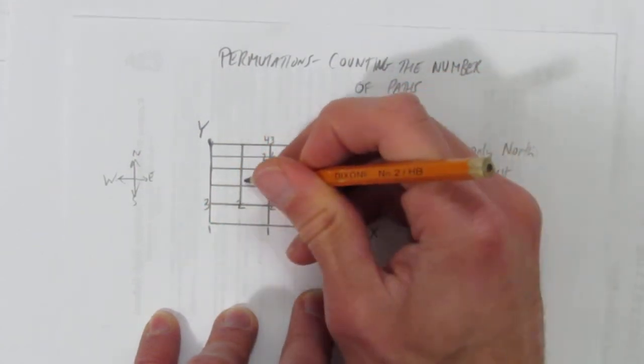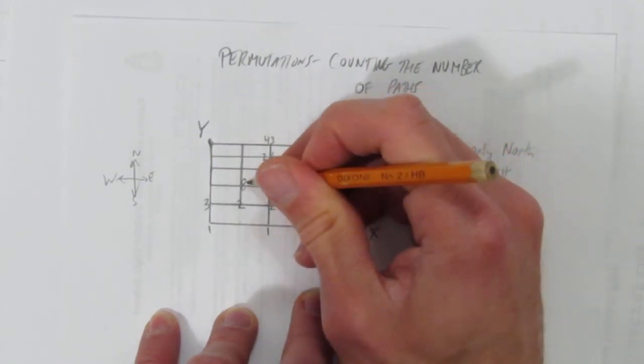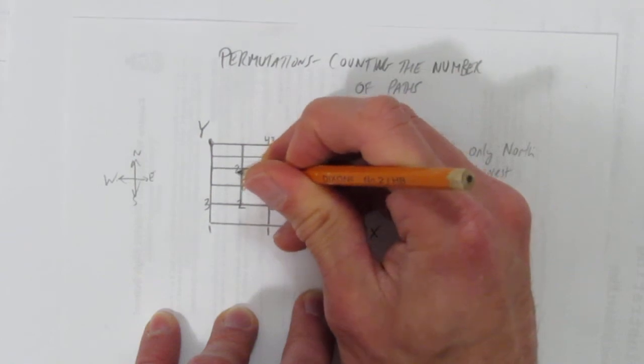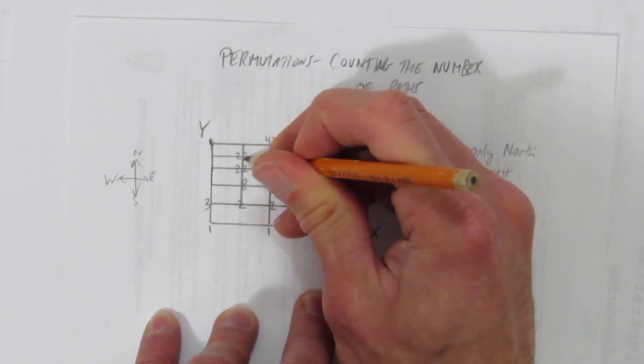Two and six to get here makes eight ways to get here. Fourteen and eight makes twenty-two ways to get here. Twenty-two and twenty-six means there's twenty-eight ways to get here.